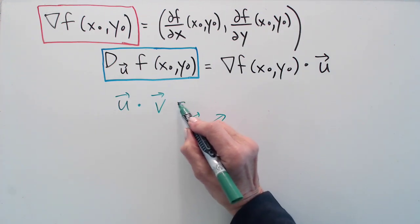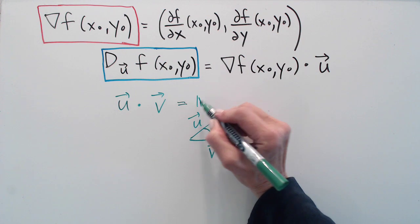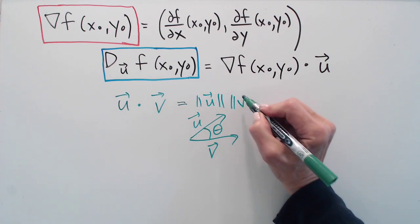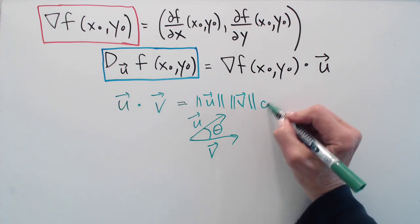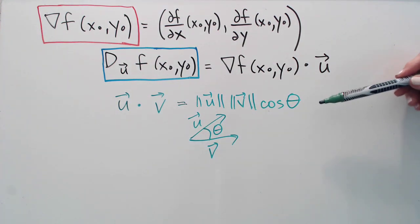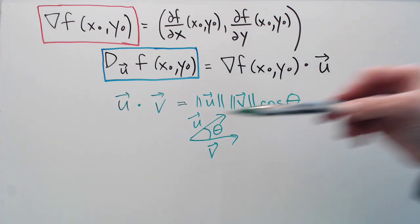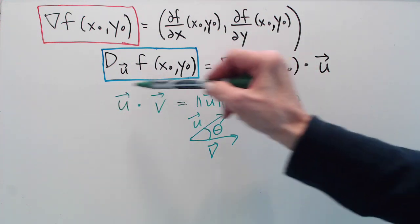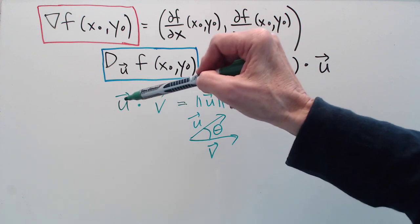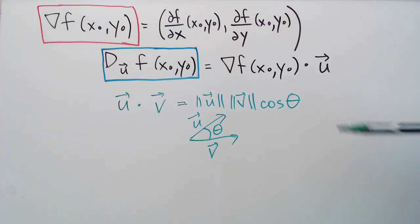Well the alternate definition is that the dot product of u and v is the length of u times the length of v times the cosine of the angle between them. This definition is extremely useful. The product of the first coordinates plus the product of the second coordinates.